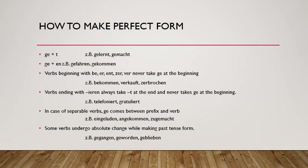Words which begin with 'be', 'er', 'ent', 'zer', or 'ver' never take 'ge' at the beginning. For example: 'bekommen' remains 'bekommen' itself. 'Verkaufen' → 'verkauft'. 'Zerbrechen' → 'zerbrochen'. So ge is never added. That's why you can see the difference: 'kommen' → 'gekommen', but 'bekommen' → 'bekommen' because ge won't be added.